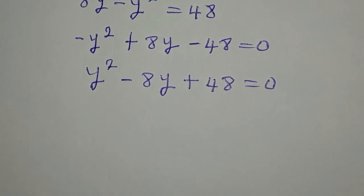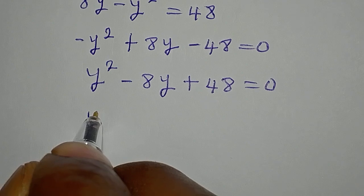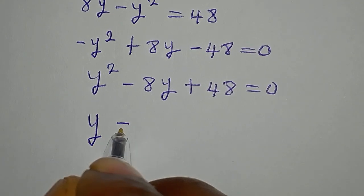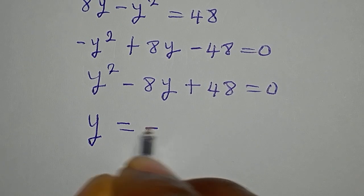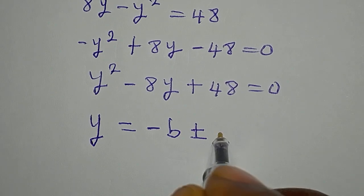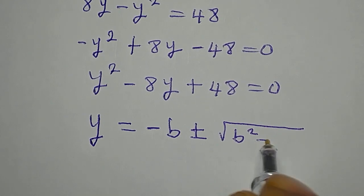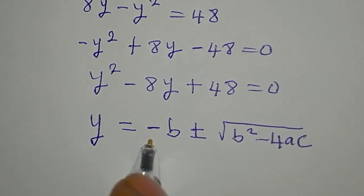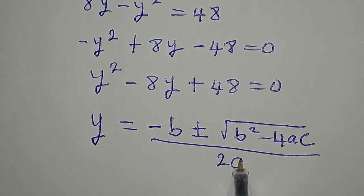Let's use the formula method. So y equals negative b plus or minus the square root of b squared minus 4ac, all over 2 times a.